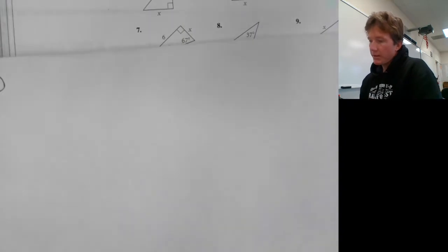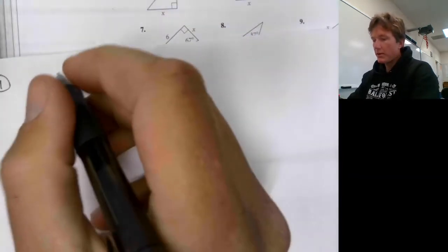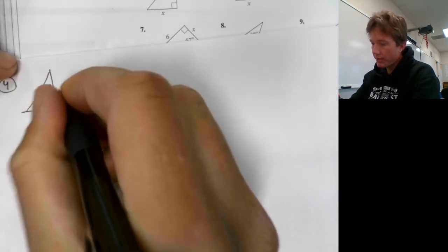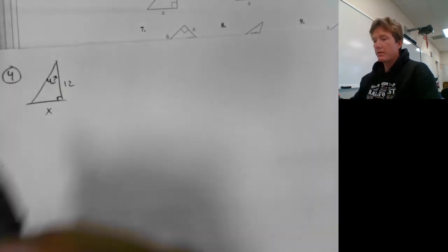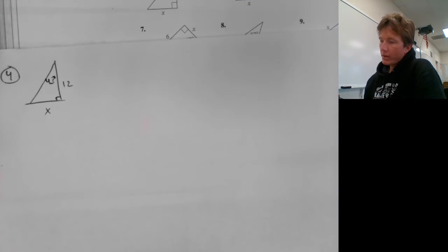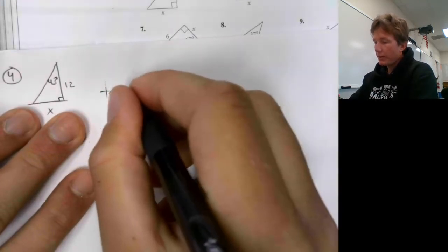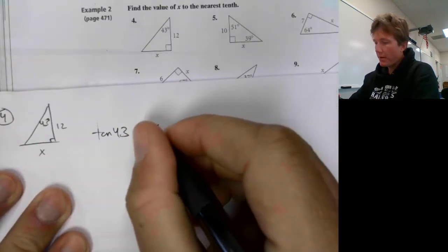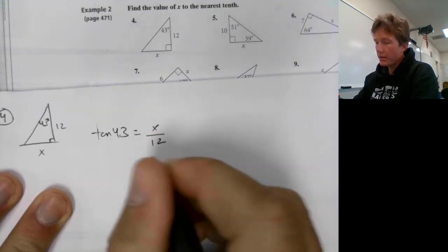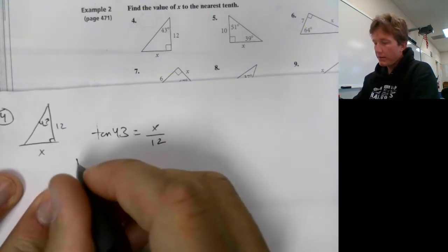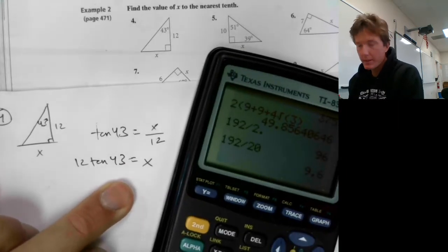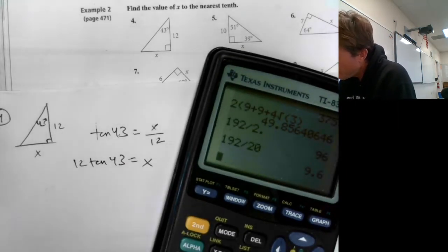Number four: find the value of X to the nearest tenth. Here we have our triangle. This time we're given the angle — 43 degrees — and I want to find out what X is. So I can say tangent of 43 is equal to the opposite over the adjacent. Then to solve for X, I'm going to multiply both sides by 12. That will undo the fraction, so I get X equals 12 times tangent of 43. Then you go to your calculator.